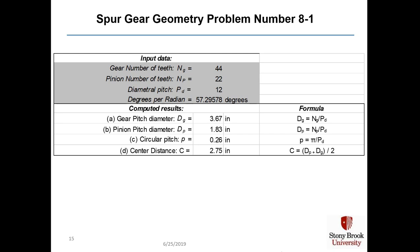This slide shows spur gear geometry problem 8-1. The gear has 44 teeth, the pinion has 22 — giving a 2-to-1 gear ratio — and the diametral pitch P sub D is 12. The gear pitch diameter D sub G is 44 divided by 12, which equals 3.67. The pinion pitch diameter D sub P is 22 divided by 12, which equals 1.83. The circular pitch p is pi divided by 12, which is 0.26. The center distance is 2.75, from (3.67 + 1.83) / 2.